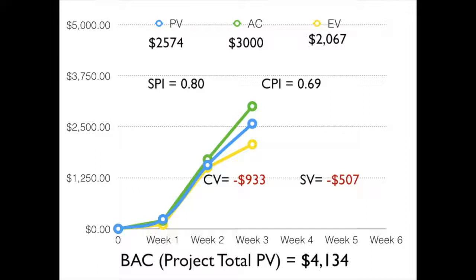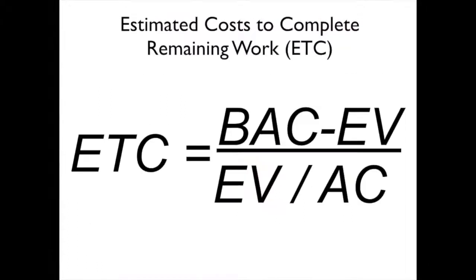If we want to project this out and figure out what might be our final costs of our project, what we're really going to do is take our current CPI and make a calculation to determine if our current CPI holds, what is it going to cost to do the work that we have left to do — what we might call remaining work. So the estimated cost to complete the remaining work, or ETC,